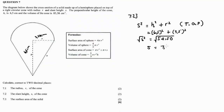s = √54.50 = 7.38. So s = 7.38 centimeters — this is the slant height.